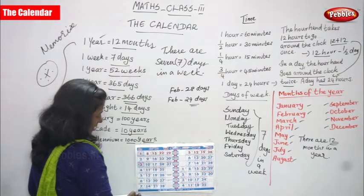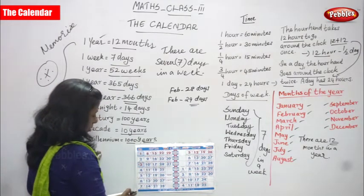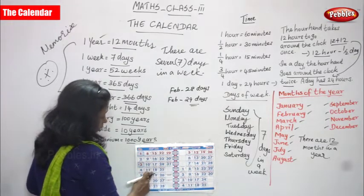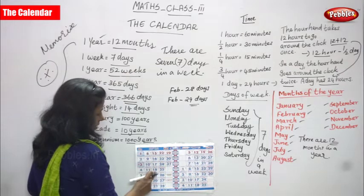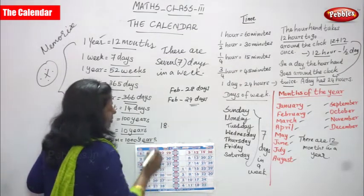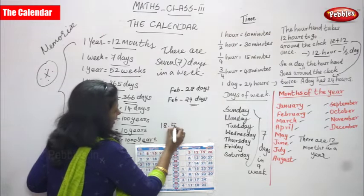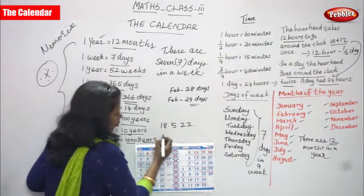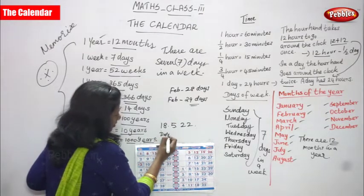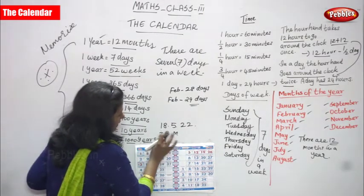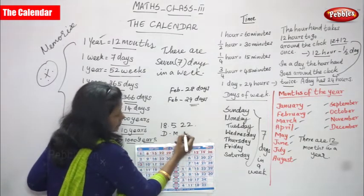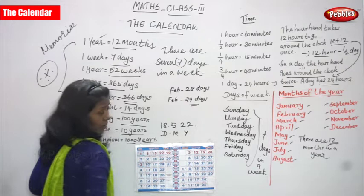What is today's date? The date is 18. The month is 5 and the year is 2022. So the date is 18, the month is 5, and the year is 2022. I will write the short form: D for date, M for month, and Y for year.